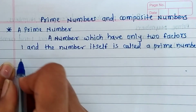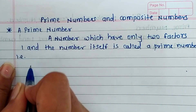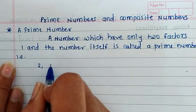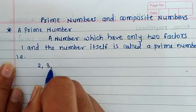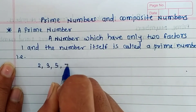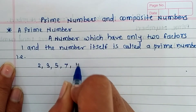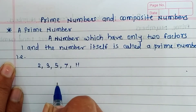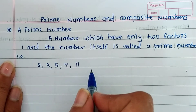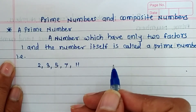Examples of prime numbers: 2, 3, 5, 7, and 11. These numbers have only two factors — 1 and the number itself.